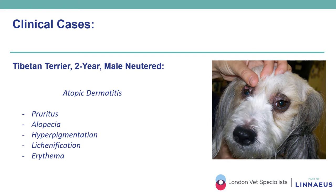Atopic dermatitis is classically described as a genetically predisposed inflammatory skin disease with characteristic clinical lesions, which often involve the perianal skin, the ear pinna, the paws and the face with particular regard to the periocular areas. This dog developed particularly striking lesions localized only on the periorbital areas.